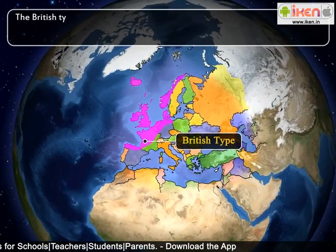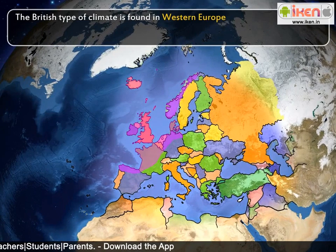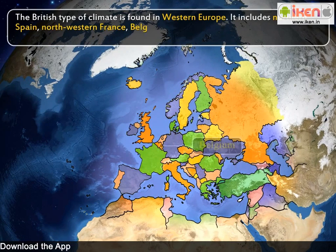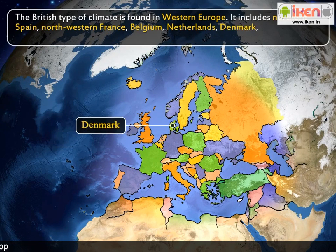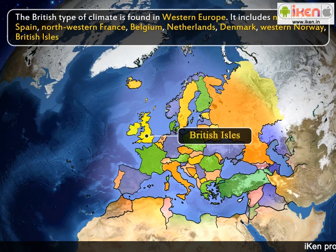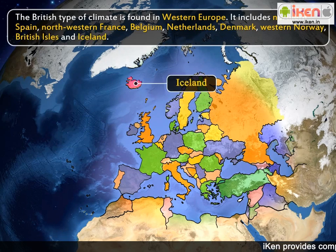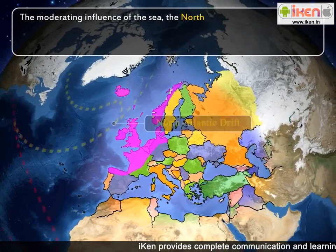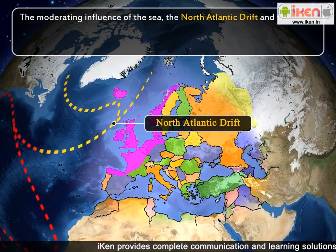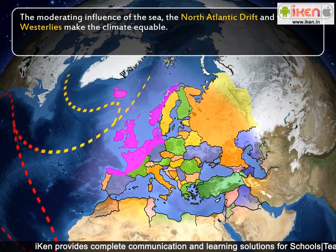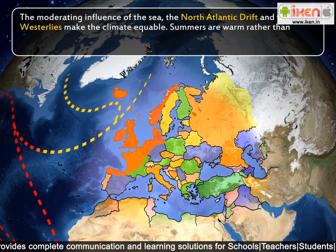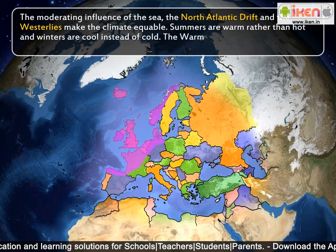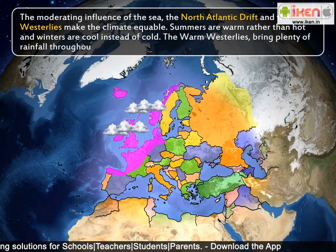The British type of climate is found in Western Europe. It includes Northern Spain, Northwestern France, Belgium, Netherlands, Denmark, Western Norway, British Isles and Iceland. The moderating influence of the sea, the North Atlantic drift and the westerlies make the climate equable. Summers are warm rather than hot, and winters are cool instead of cold. The warm westerlies bring plenty of rainfall throughout the year.